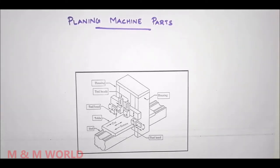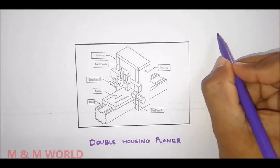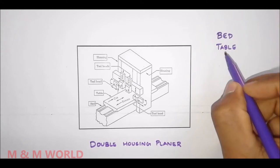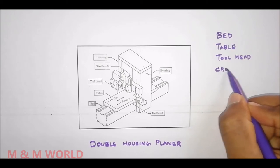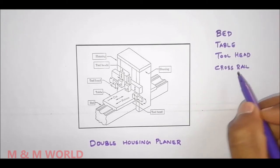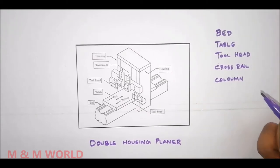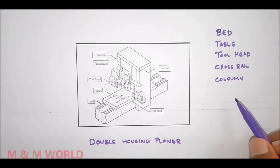Hi everyone, in this video we will study about planing machine parts. A standard or double housing planer consists of a bed, a table, tool head, cross rail, and column or housing or upright. These are the main parts of a double housing planing machine.